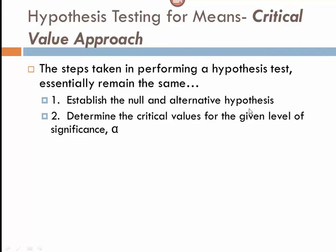Secondly, we determine the critical values for the given level of significance, alpha. Sometimes we're given the confidence level — just keep in mind that alpha and the confidence level are complements of each other. If one is 95, the other is always 5. If one is 90, the other is always 10. The significance level is the area in the tails, and the confidence level is the area in the fail-to-reject region.